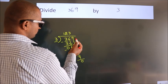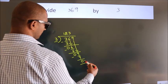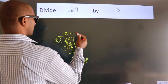After this, no more numbers to bring it down. So we stop here. This is our remainder. This is our quotient.